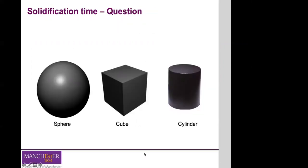Here is a question for you to think about. If you have three metal pieces to cast — a sphere, a cube, and a cylinder with height equal to its diameter — and they all have the same volume, based on Chvorinov's rule, which piece do you think will solidify the fastest and which will solidify the slowest? Start thinking about it and we can discuss it towards the end of the lecture, and we'll come back to it in the next lecture.